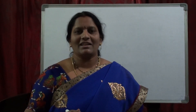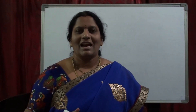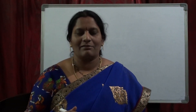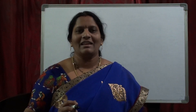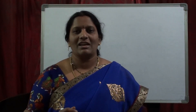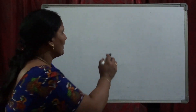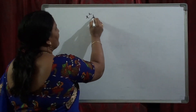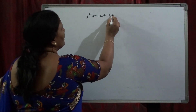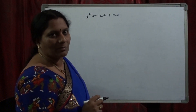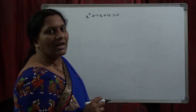In the previous video, we have seen how to find the roots of the quadratic equation by using the factorization method and by using the quadratic formula. Now, in this session, the third method is we are going to find the roots of the quadratic equation by the complete square method. In this method, consider x² + 7x + 12 = 0. How to solve this by the complete square method.